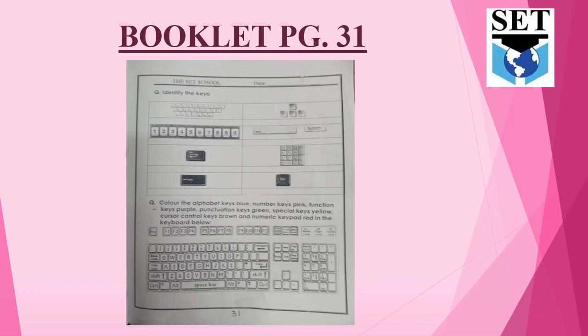Booklet page number 31 has the same questions - Identify the keys. Keys are given and we need to show and write their correct names. The next question says: Color the alphabet keys blue, number keys pink, function keys purple, punctuation keys green, special keys yellow, cursor control keys brown, and numeric keypad red. Using the keyboard picture given, color the respective keys with their assigned colors.